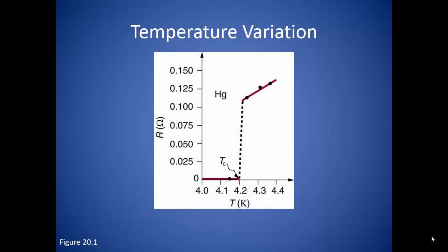For example, if we look at a graph of the resistance of mercury as the temperature decreases, what we see is a slight decrease for a while, and then suddenly the resistance drops off. So with that critical temperature, mercury becomes a perfect conductor, or a superconductor.